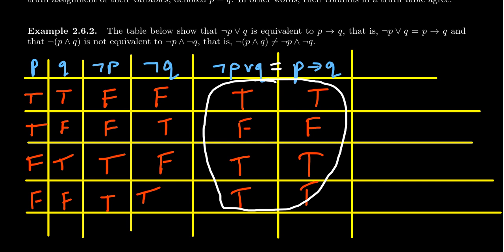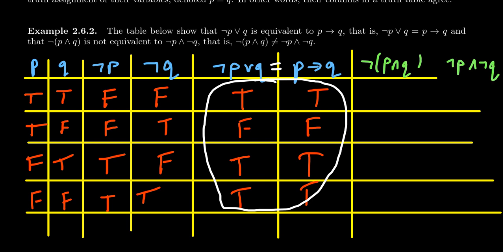What I want to do next is show that the statement not of (P and Q) is not the same thing as not P and not Q — that is, those give us different statements. If I take not (P and Q) versus not P and not Q, let me draw a line there to make it easier to read, and then let's fill in the truth values. So for not (P and Q), you look at not P and Q.